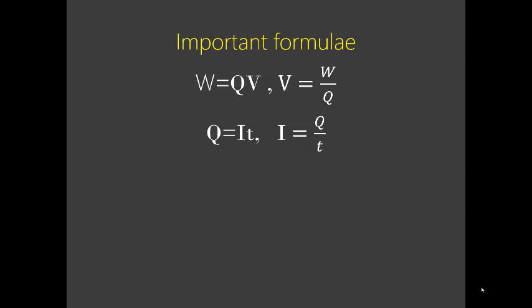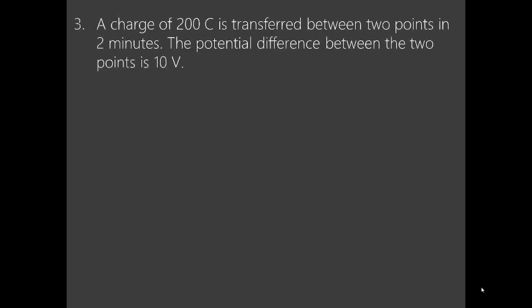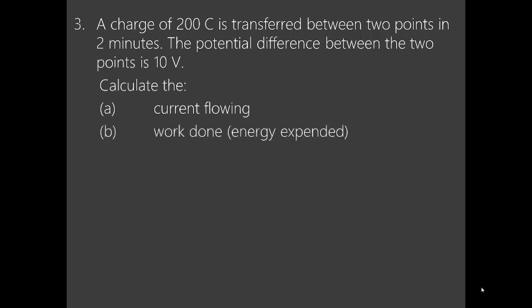Q is equal to IT, which means I is equal to Q over T. So today, I want us to start by looking at the exercise that I left behind, which was: a charge of 200 coulombs is transferred between two points in two minutes. The potential difference between the two points is 10 volts. Part A was to calculate the current flowing, and part B, the work done for that charge to be moved from one point to another.